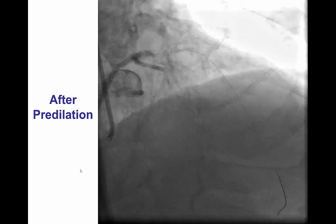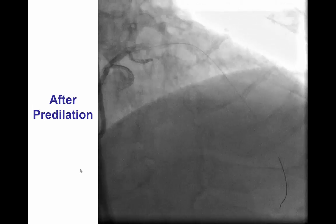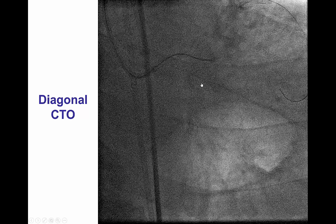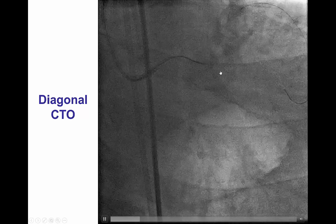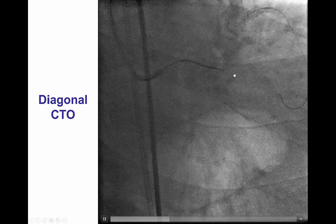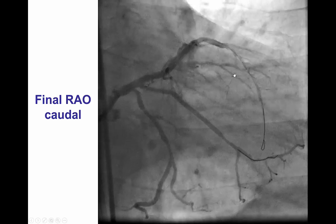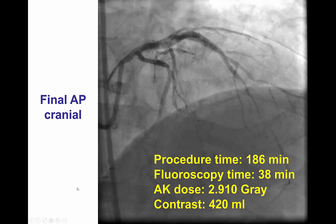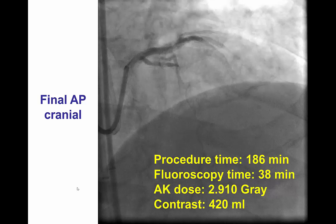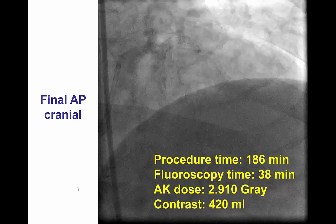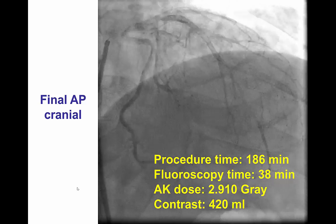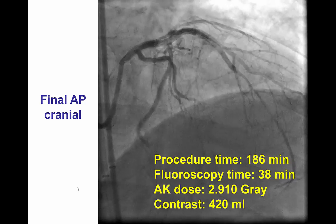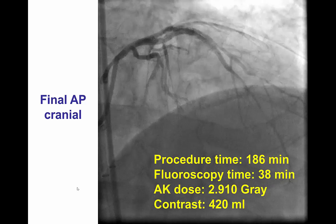The lesion was predilated and antegrade flow was restored, with maintained flow into the large diagonal branch near the distal cap. We also treated a first diagonal CTO that was easily crossed with antegrade wire escalation. After stents were placed, antegrade TIMI flow was restored in both the LAD and the diagonal branch, with a nice final angiographic result. The case took approximately three hours, 38 minutes of fluoroscopy at 2.9 Gray with 420 mLs of contrast — demonstrating that balloon uncrossable lesions can be challenging and require multiple strategies.